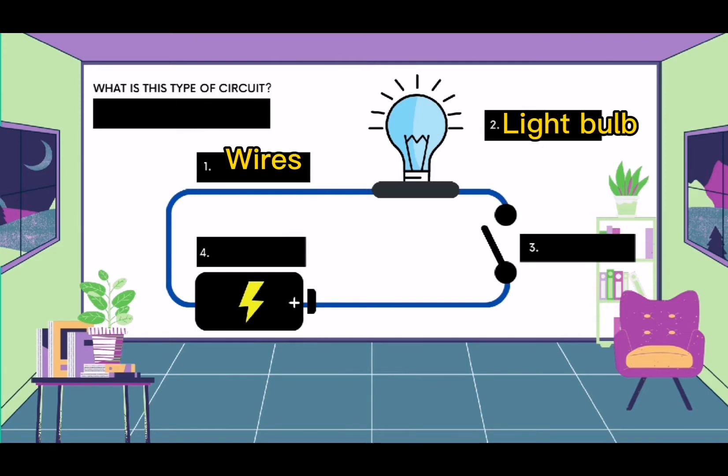Number 3, switch. Number 4, source or battery. And what is this type of circuit? Correct! Open circuit.